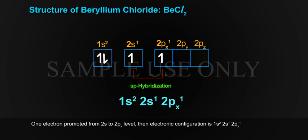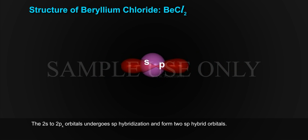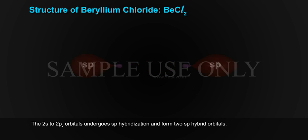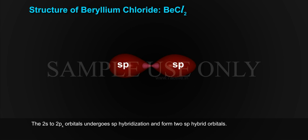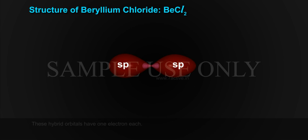The excited state electronic configuration is 1s², 2s¹, 2px¹. The 2s and 2px orbitals undergo SP hybridization and form 2 SP hybrid orbitals. These hybrid orbitals each contain one electron.